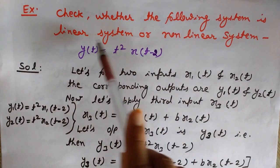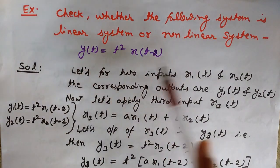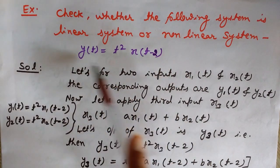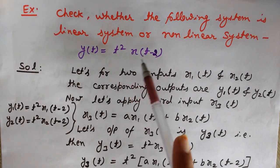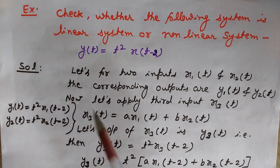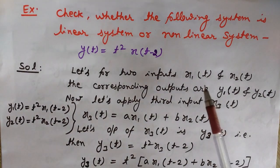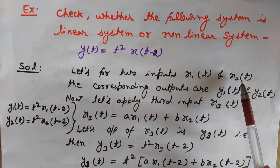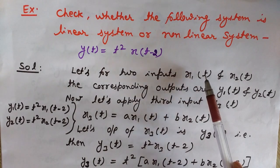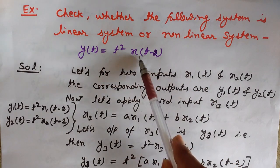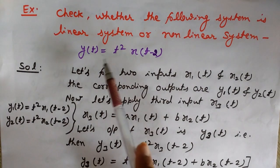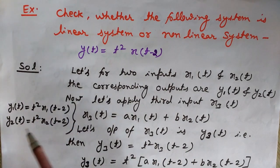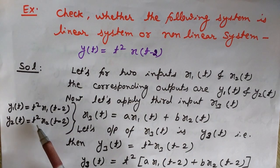So check whether the following system is linear or nonlinear. The system equation is y(t) = t²·x(t−2). We need to check this system for linearity. Let's suppose that first x1(t) is applied to this system and then we will apply x2(t). When we apply x1(t), the output is y1(t) = t²·x1(t−2). And for x2(t), the output is y2(t) = t²·x2(t−2).